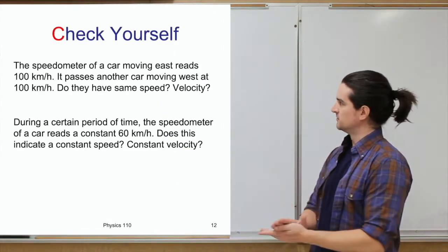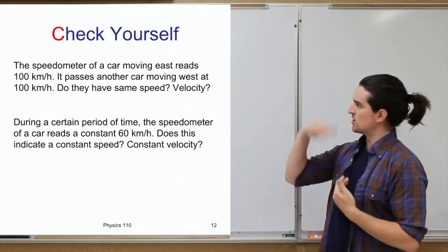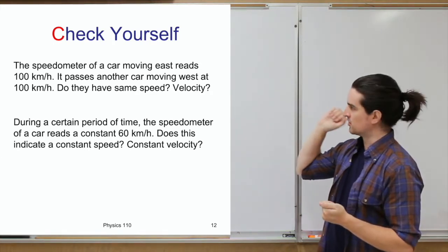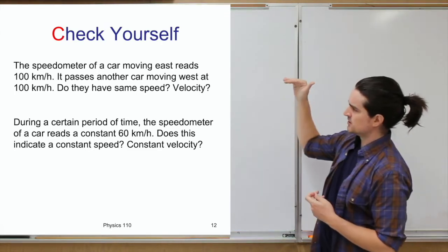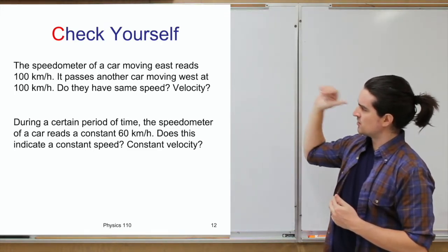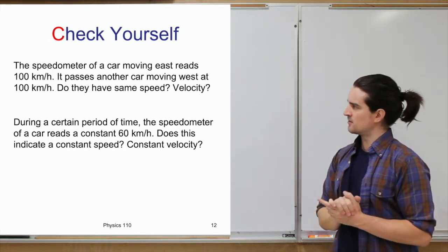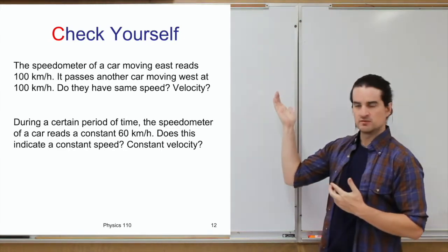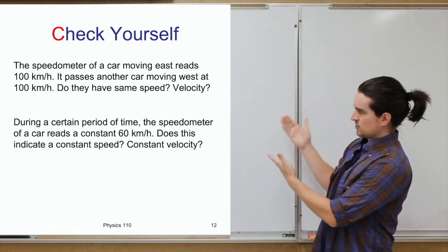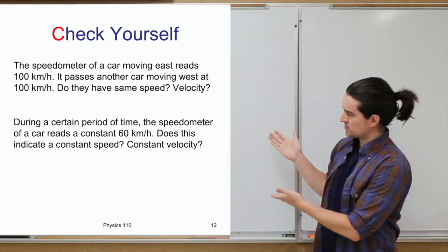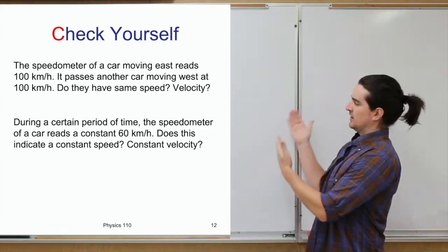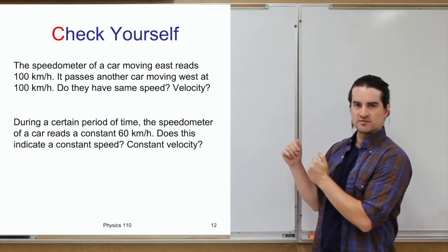A couple more questions: if your speedometer reads 100 kilometers per hour and you pass another car moving west at 100 kilometers per hour, do you have the same speed? The same velocity? And separately, if your speedometer shows a constant 60 kilometers per hour for a period of time, does that indicate a constant speed, and does it also indicate a constant velocity?